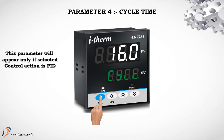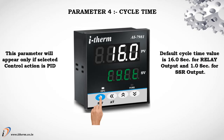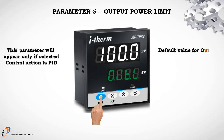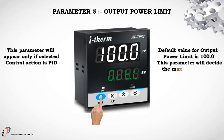Parameter 4: Cycle Time. This parameter will appear only if selected control action is PID. Default cycle time value is 16.0 seconds for relay output and 1.0 second for SSR output. Parameter 5: Output Power Limit. This parameter will appear only if selected control action is PID. Default value for output power limit is 100.0. This parameter will decide the maximum output power in percent applied to the load.